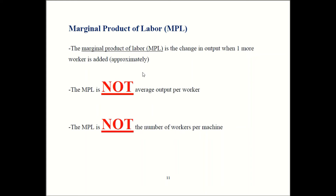How much additional output you get when you hire an extra worker is not always going to be the average. It's also NOT the number of workers per machine. One time I was teaching principles of macro and I emphasized that MPL is NOT average output per worker, and successfully stamped out that myth. Unfortunately, my students then proceeded to invent a new myth: MPL is number of workers per machine. It's not true. Just stick to the definition: change in output when you add one more worker.